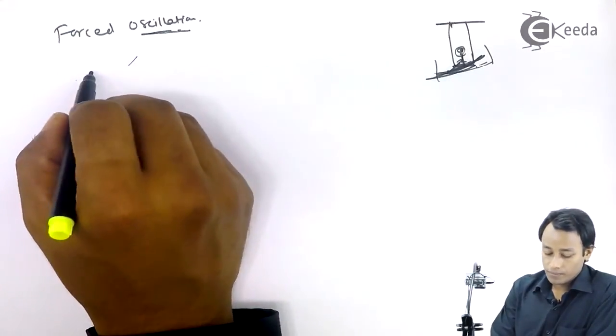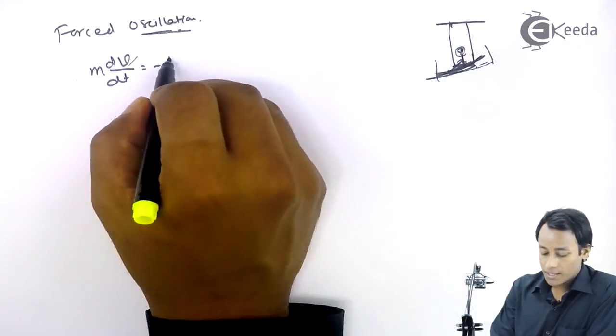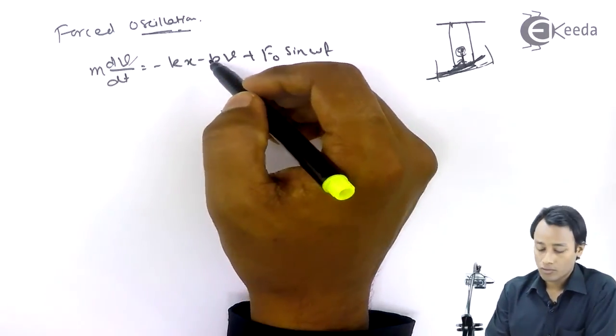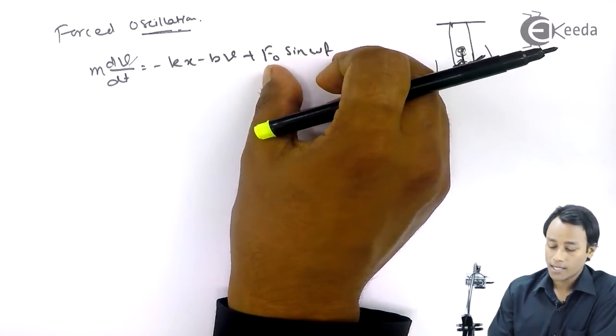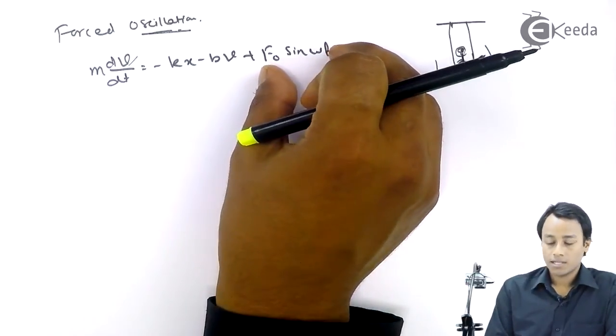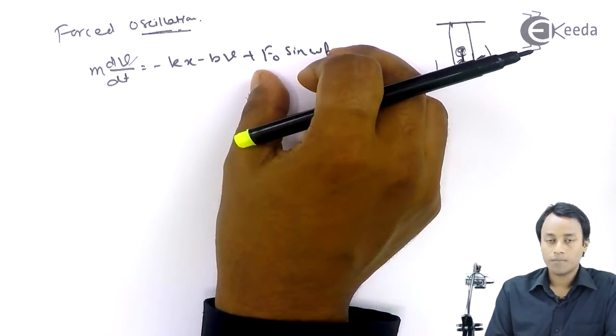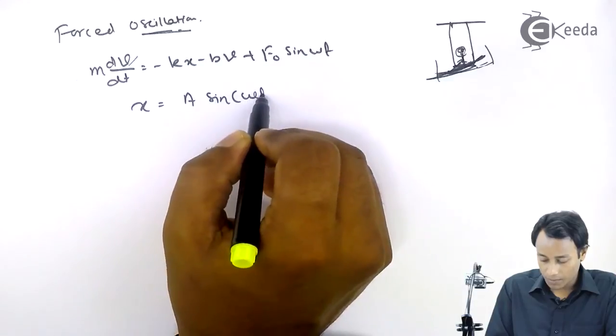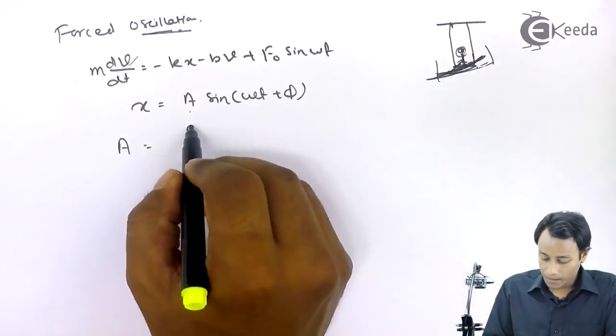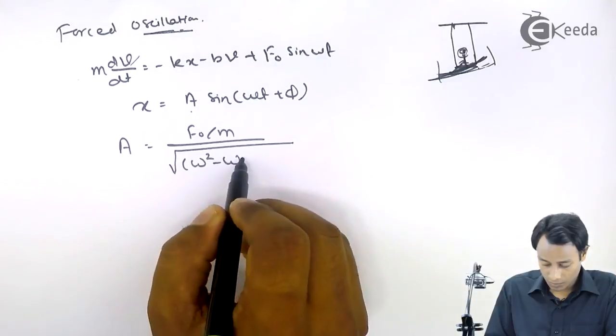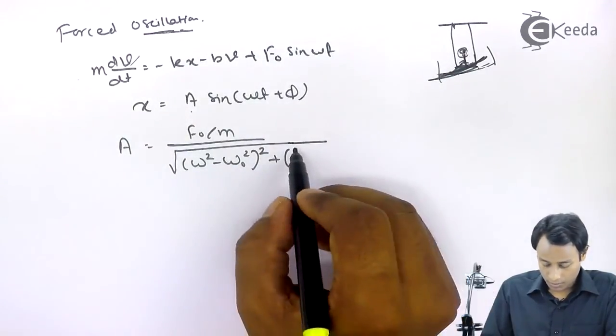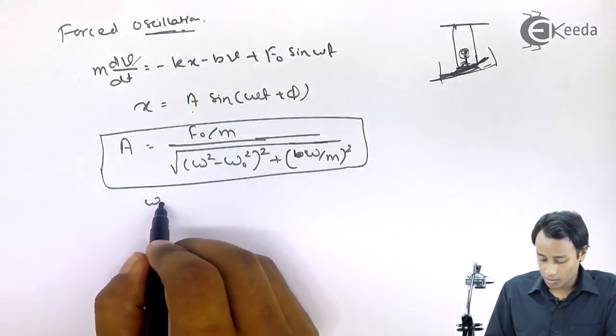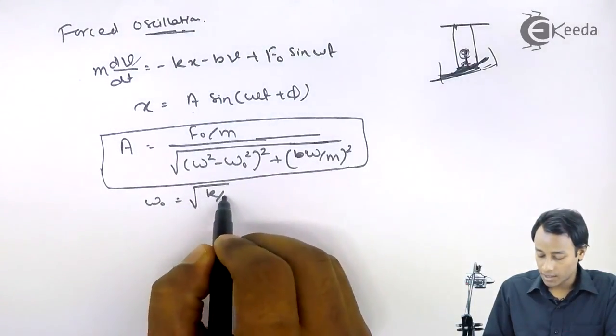And for this oscillation, the equation stands out to be, minus kx minus Bv, plus f naught sin omega t. This kx you see, this is the restoring force, Bv is the damping force, and this you see, f naught sin omega t, this f naught sin omega t, is the external force, which we call forcing function, or driving force. When you solve it, the displacement is given by, or the position of the particle, is given by, this equation over here. This amplitude, is given by, the relation over here. And you know this omega naught, is the natural frequency of the oscillator, given as under root of k by m.